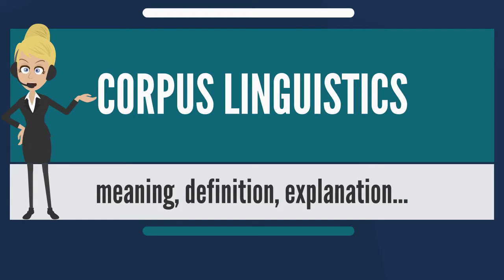Other corpora represent many languages, varieties and modes, and include the International Corpus of English and the British National Corpus — a 100-million-word collection of a range of spoken and written texts created in the 1990s by a consortium of publishers, universities (Oxford and Lancaster), and the British Library.